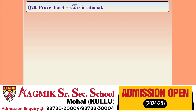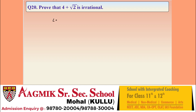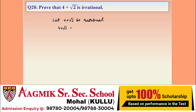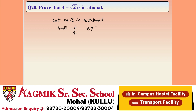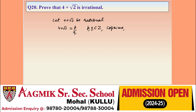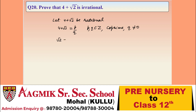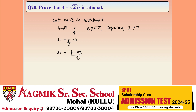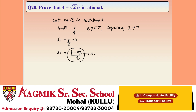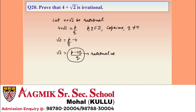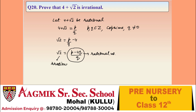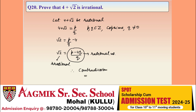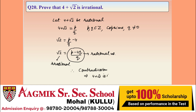Question 20: prove that 4 + √2 is irrational by contradiction. Assume 4 + √2 is rational, so it equals P/Q where P, Q are integers, Q ≠ 0, and they are co-prime. Then √2 = (P - 4Q)/Q. Since P and Q are integers and Q is non-zero, the right side is rational. But the left side is irrational — a contradiction. Therefore our assumption is wrong, and 4 + √2 is irrational.